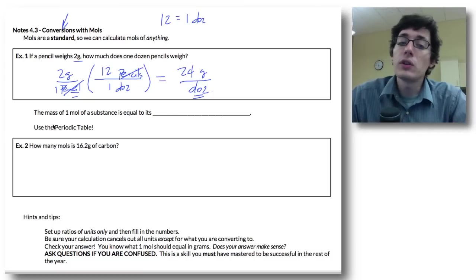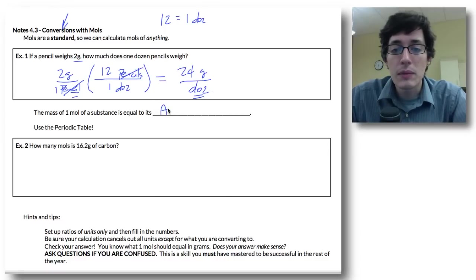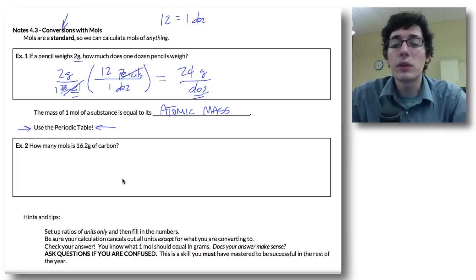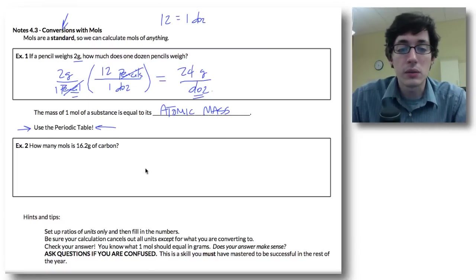Now, if we're using the mass, the mass of one mole of a substance is equal to its atomic mass. So we need to be using our periodic table. This is really important. Make sure you have it with you or make sure you can find one somewhere.